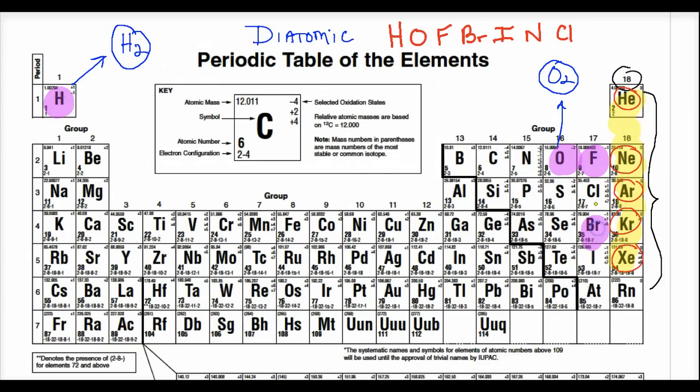Okay, bromine, chlorine, nitrogen, and iodine. And the reason that I'm telling you this is you have to be aware for a couple of different reasons down the road in this unit who your diatomic elements are.